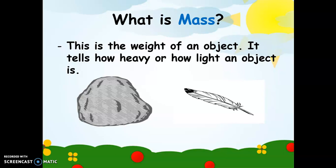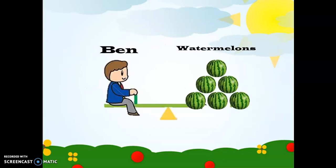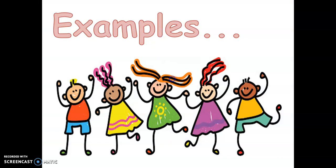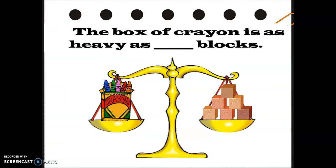So what is mass? Mass is the weight of an object — it tells how heavy or how light an object is. Let's look at the picture: how many watermelons do we need to measure Ben's mass? Let's count — one, two, three, four, five, and six. Impressive! Ben is as heavy as six watermelons.